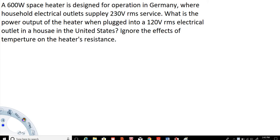A 600 watt space heater is designed for operation in Germany where the household electrical units supply 230 volt RMS service. What is the power output of the heater when plugged into a 120 volt RMS electrical outlet in a house in the United States? Ignore the effects of temperature on the heater's resistance.